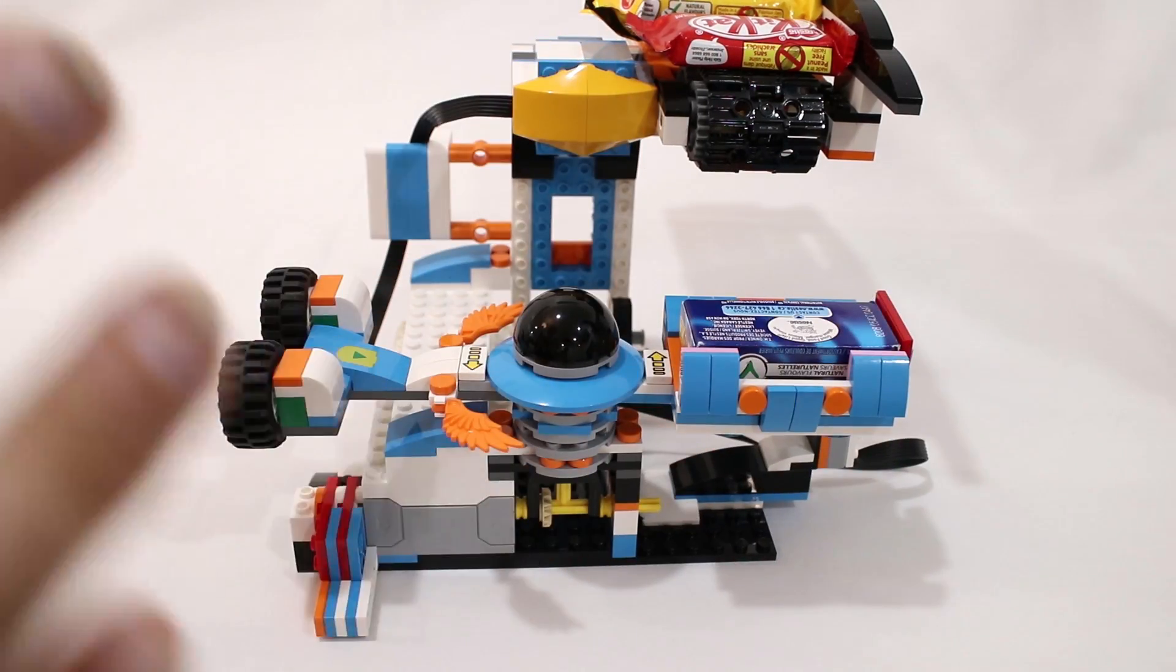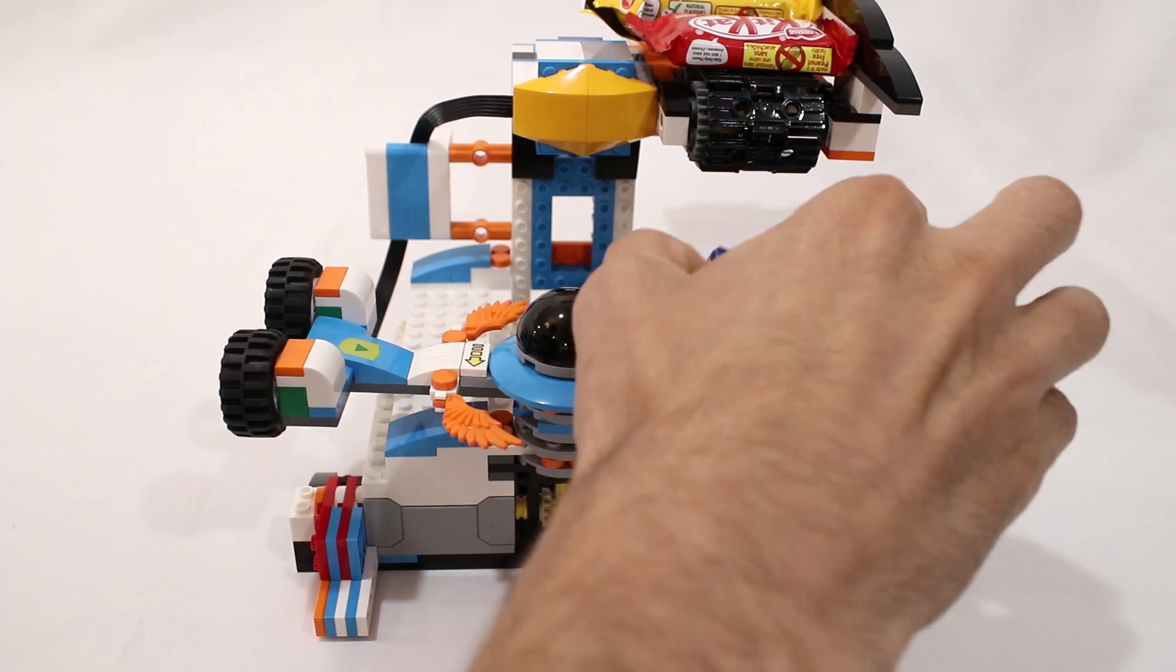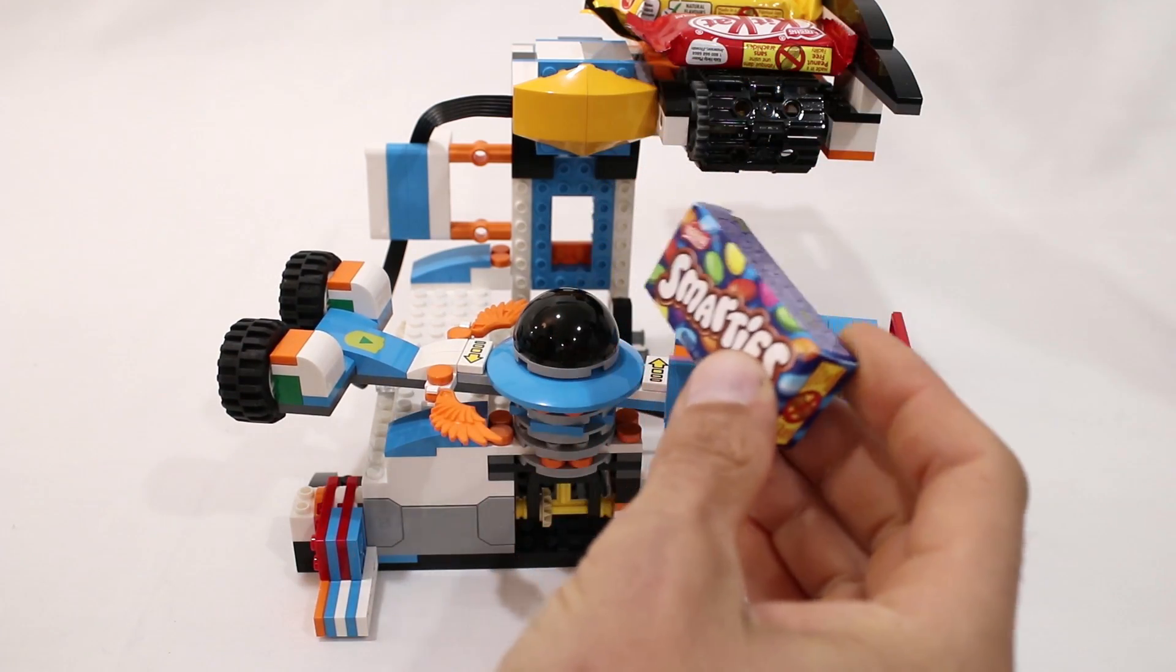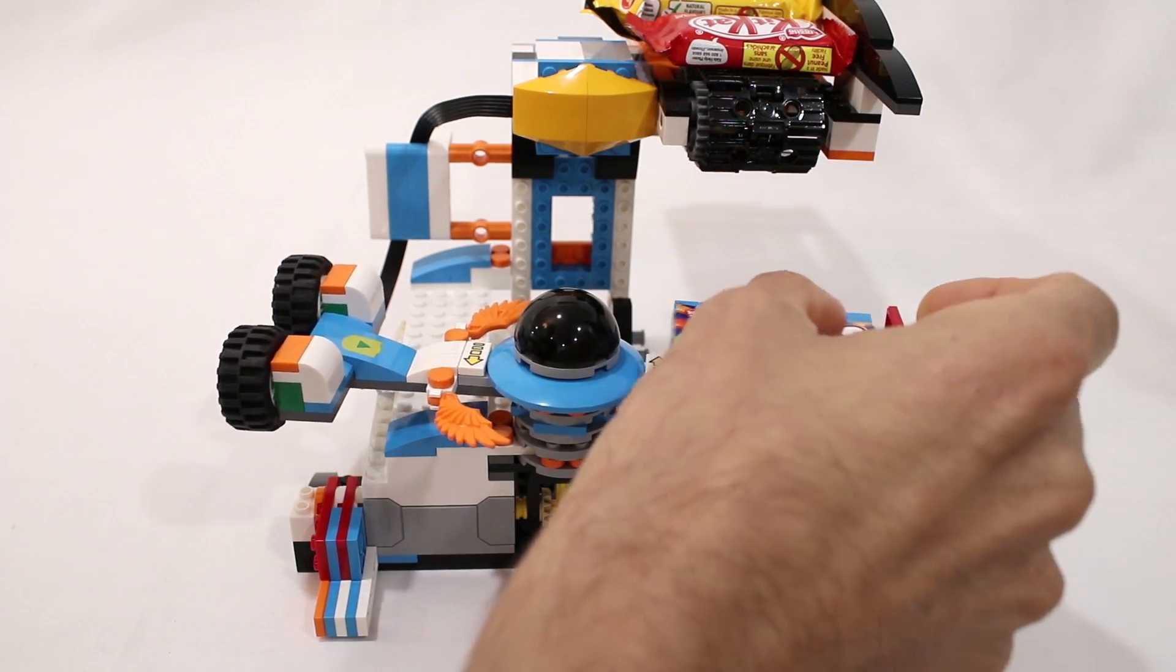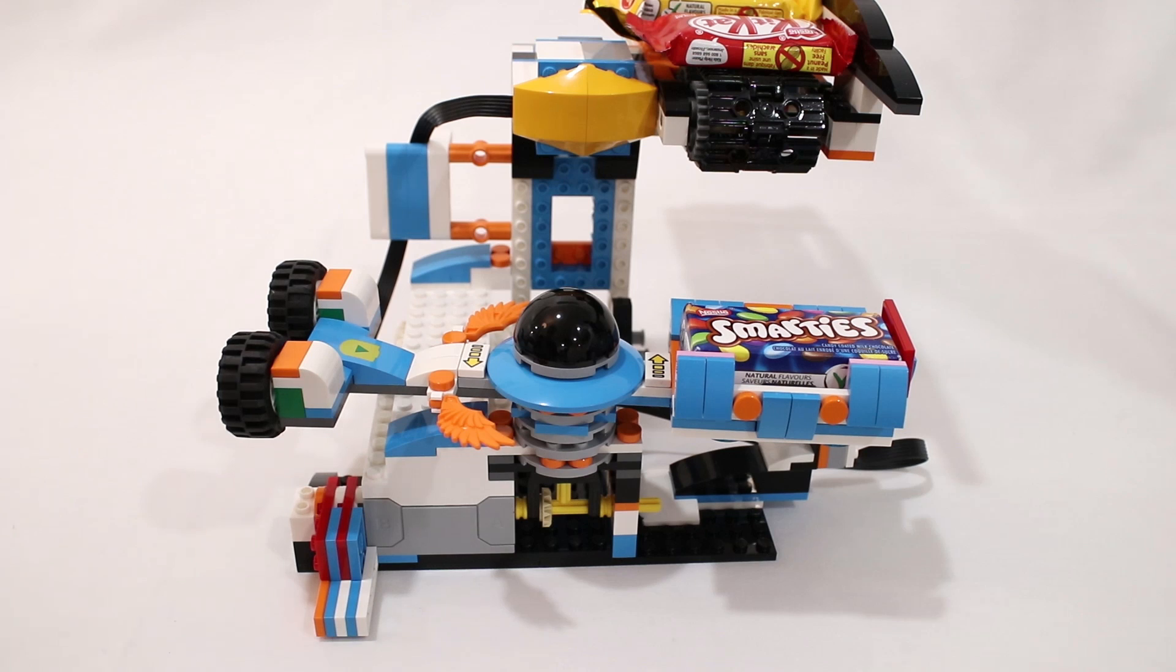Now the reason I designed it this way is that in order to launch something even as small as one of these mini chocolates, it actually takes quite a bit of energy to be applied almost instantaneously to get it to go any reasonable amount of distance. And that's something that's really hard to do with LEGO motors—they're just not designed for that.